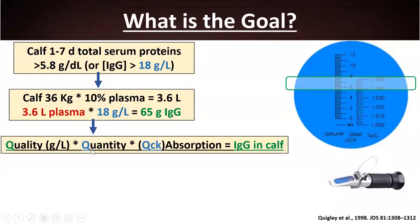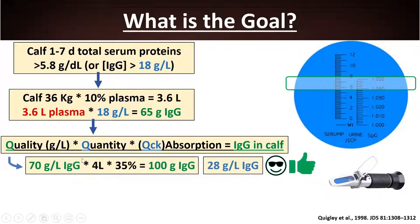To achieve that, we need colostrum of appropriate quality and quantity, fed rapidly after calving, because the absorption rate of immunoglobulins decreases with hours after birth. For example, with high-quality colostrum at 70 grams per liter of IgG, feeding 10–12% of body weight — roughly four liters — rapidly after calving with good absorption at 35%, that calf would absorb 100 grams of IgG.